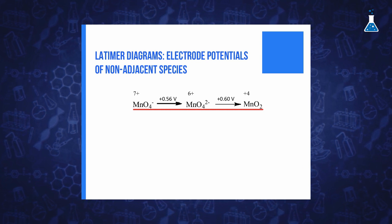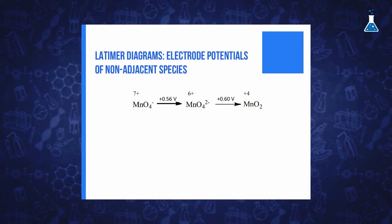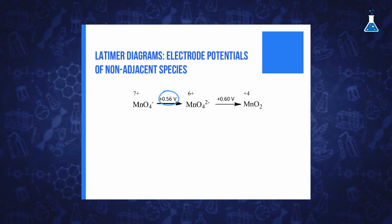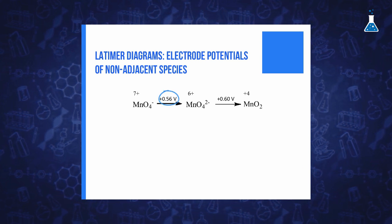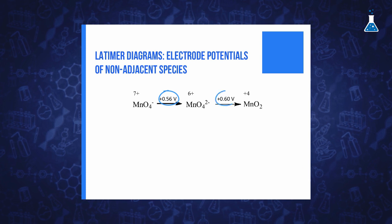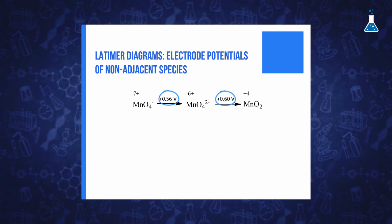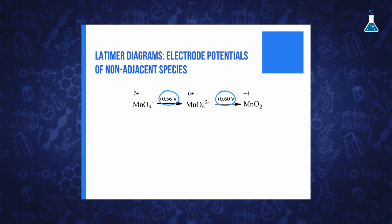That is, the sum of variation of free energy for the reduction from permanganate anion to manganate anion and the reduction from manganate anion to manganese dioxide, as described in the following equation.